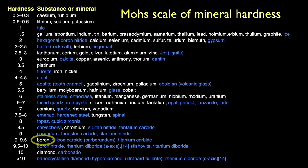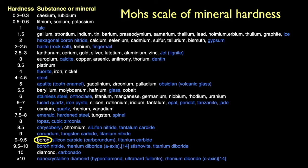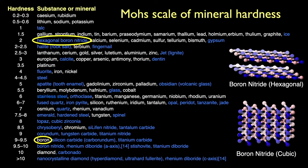Boron is really hard stuff, coming in at 9.3 on Mohs's scale of hardness, invented by German geologist Friedrich Mohs in 1812. Interestingly, there are two forms of boron nitride, both chemically identical but structurally different. Hexagonal boron nitride has a structure similar to graphite, forming sheets. Like graphite, this form is also soft, with a hardness of 2. Rearrange those atoms into a cubic structure, and you get boron nitride that's even harder than pure boron, with a hardness very close to diamond.